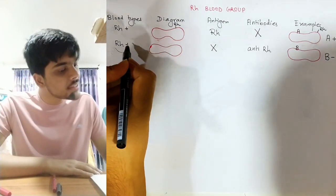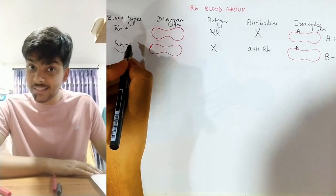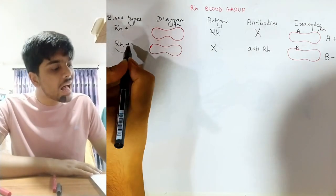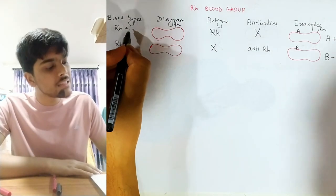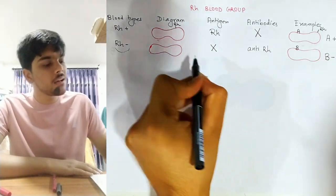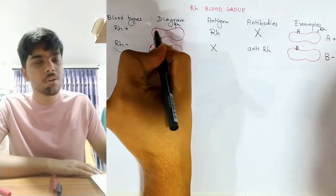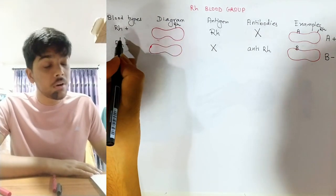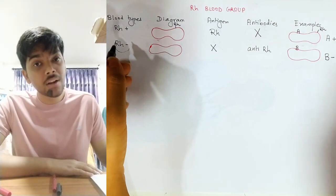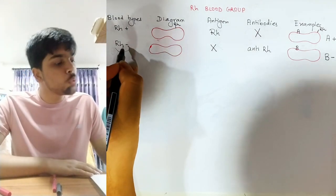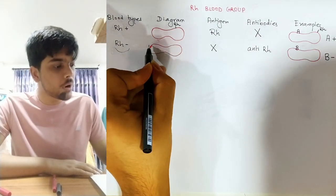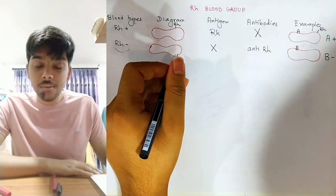Rh negative blood can receive from only Rh negative, because it has anti-Rh antibodies that would attack the Rh antigen present on RBCs of Rh positive blood. However, Rh negative blood can donate to both Rh negative and Rh positive, because there is no Rh antigen on the surface of Rh negative RBCs — so there is nothing to be attacked.